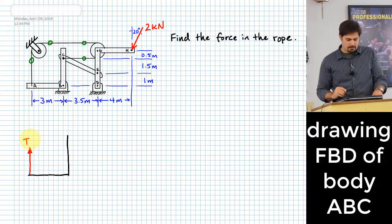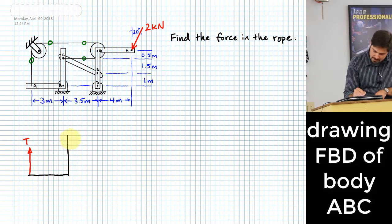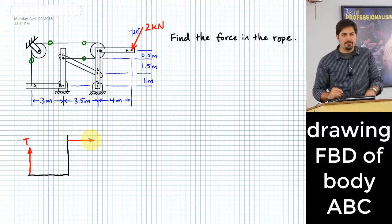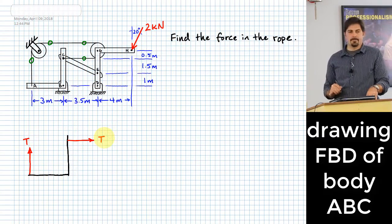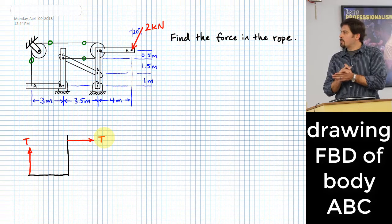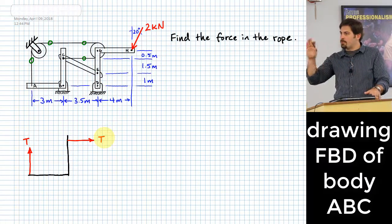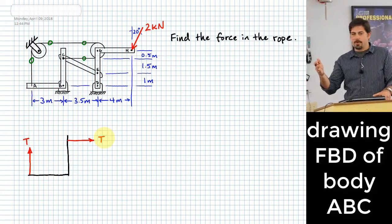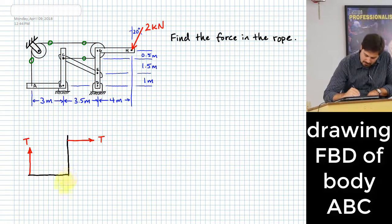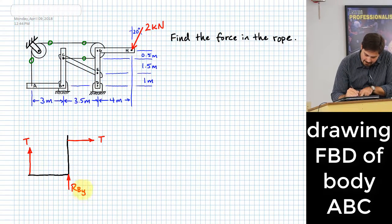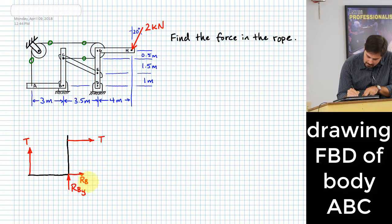The rope also pulls at point C with the same tension T. At B there's a pin, and the pin at B constrains motion of this body from being able to move left and right or up and down. It's not allowed to do either of those things, which means the pin at B has to be putting a force to prevent those types of motion — so we put on RBY and RBX.